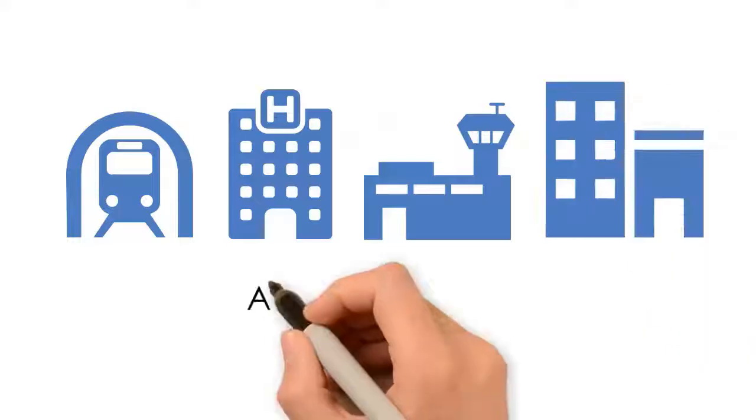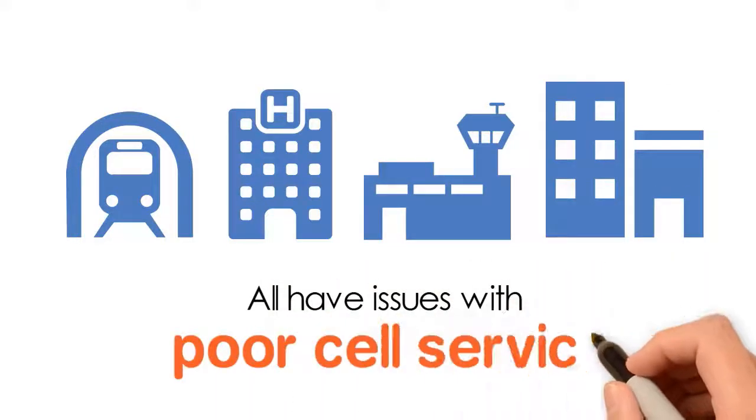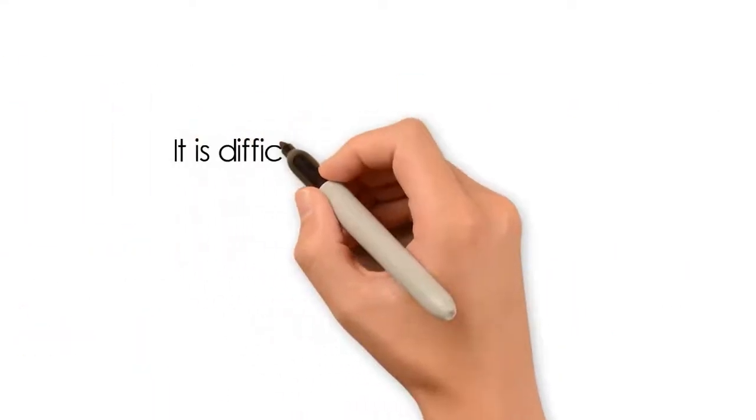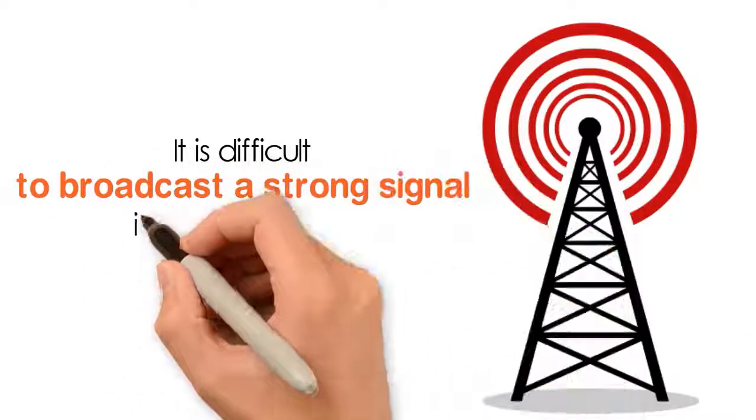Tunnels, hotels, airports and other large structures all have issues with poor cell service. It is difficult for an outdoor cell tower to broadcast a strong signal into these places.